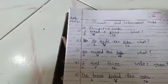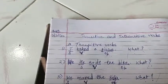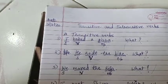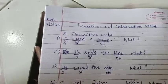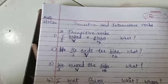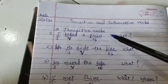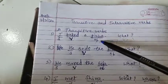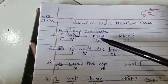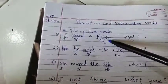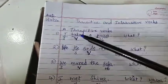The first example is: I baked a pizza. We divide the sentence into subject, verb, and object. 'I' is the subject — the doer of the action. 'Baked' is the verb. Now if I stop and say 'I baked,' you would ask: what did you bake? The answer to the question 'what' is pizza, so pizza is the object. This verb needed an object to complete its meaning, so it is called a transitive verb.